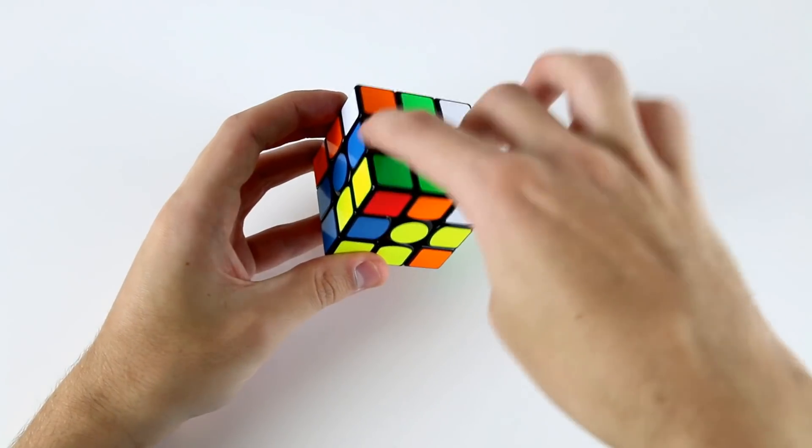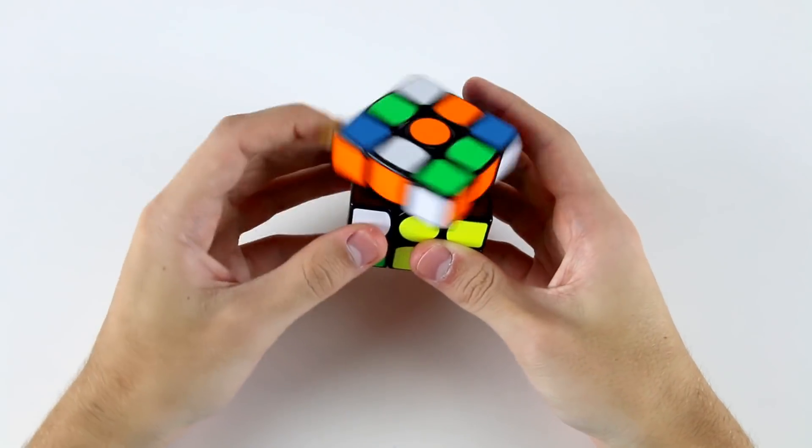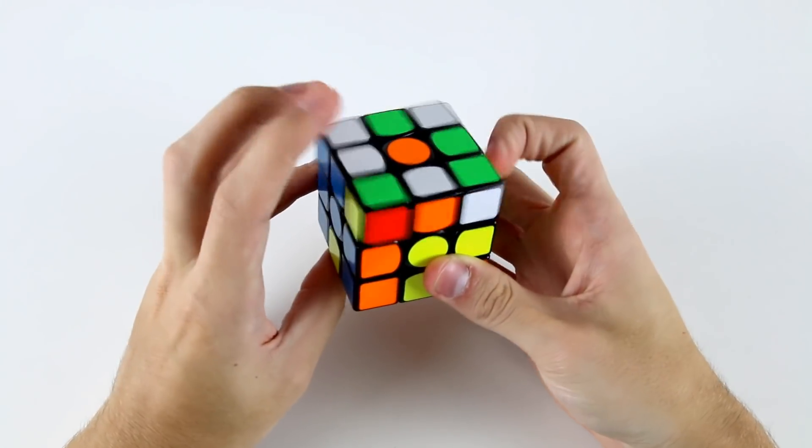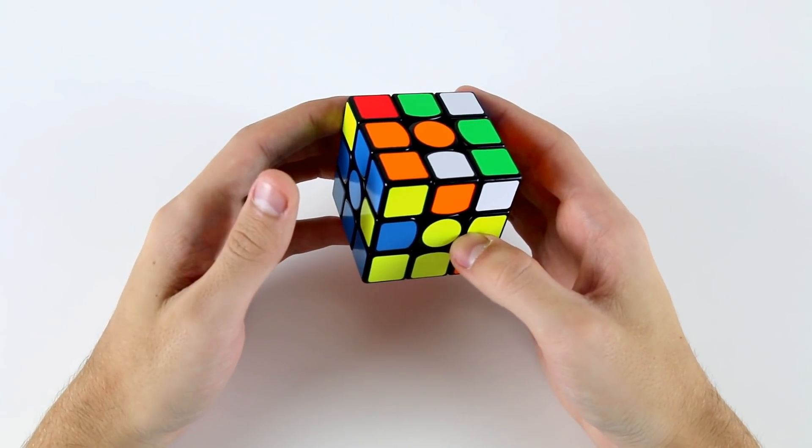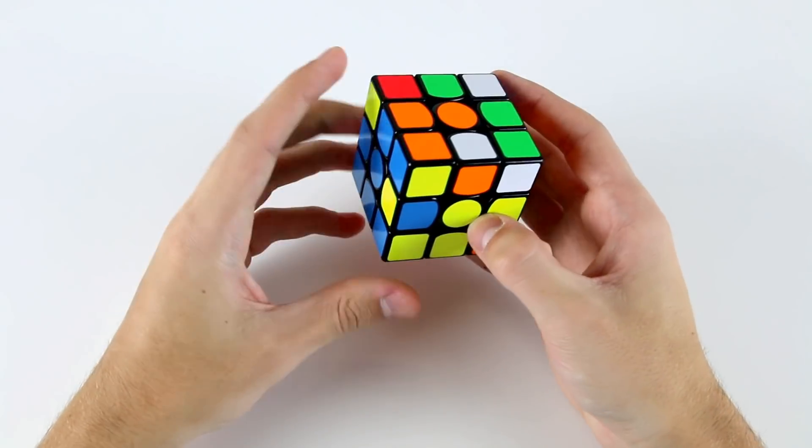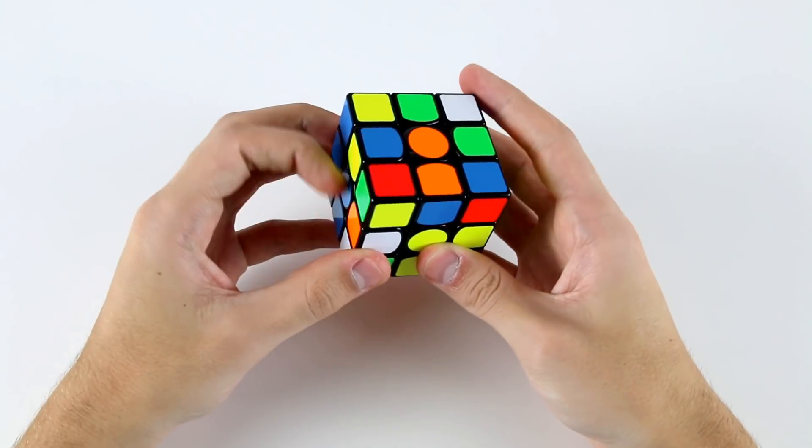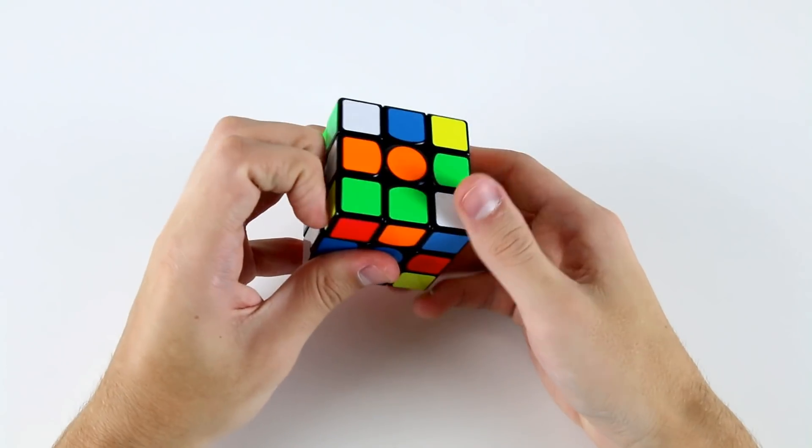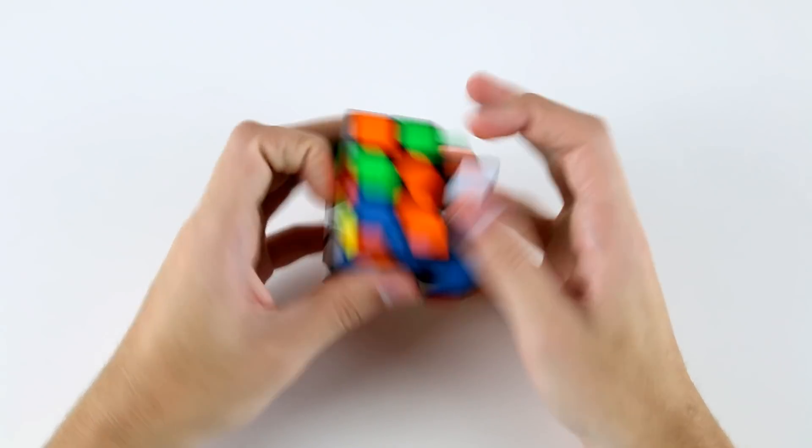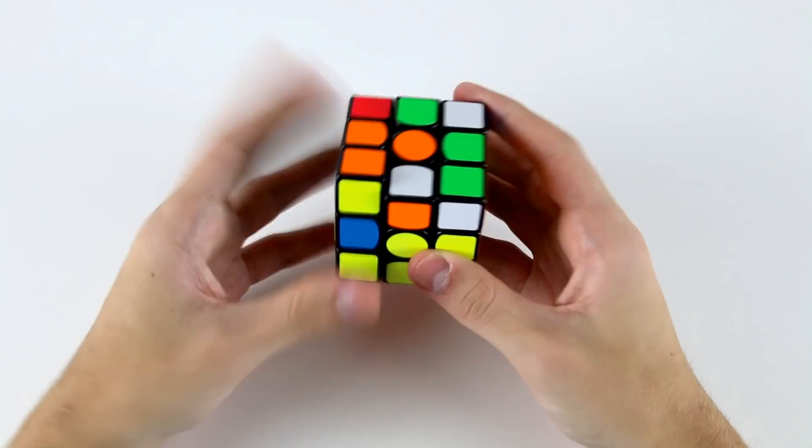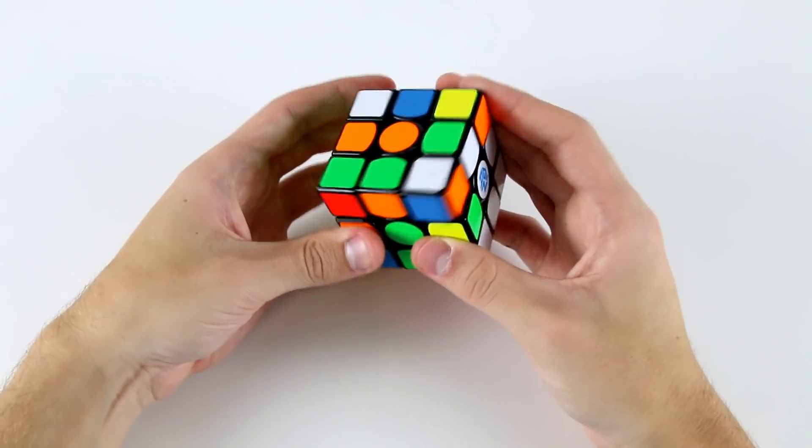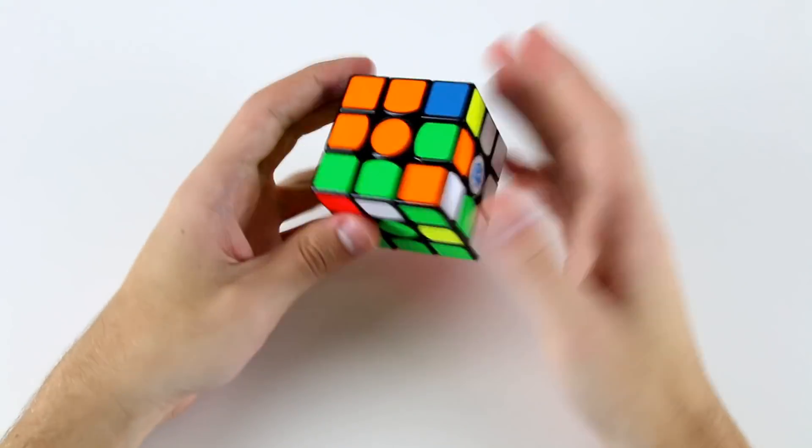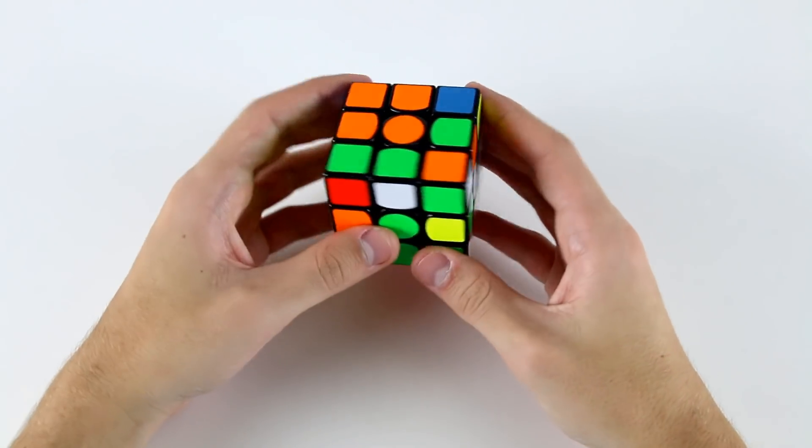Now the first F2L pair that I'm going to go for is these two. Then I don't have many options, I guess I could go ahead and solve these two which is kind of annoying because it's not a very nice case. Actually what I should have done was taken it out like that and then rotated and inserted it into the back there because now I've got my two front F2L slots open.